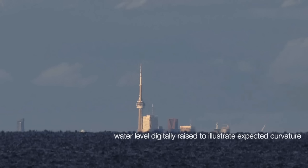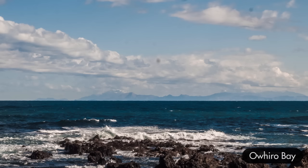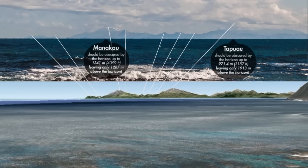Now let's take a look at this example. This is a video I did a little while back, the Wellington Harbour curvature test part 2. Those mountains over there that you can see are 83 and 93 miles away and there should be about a mile of curvature, a little bit less.